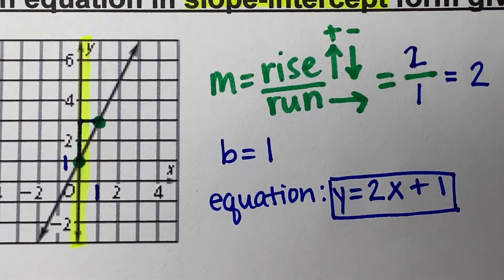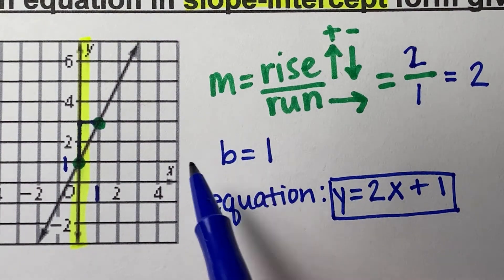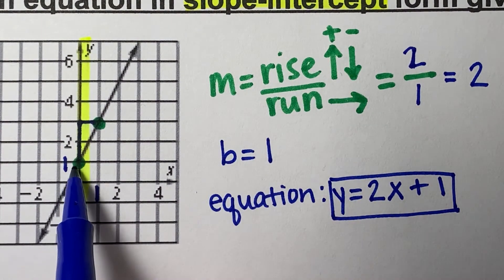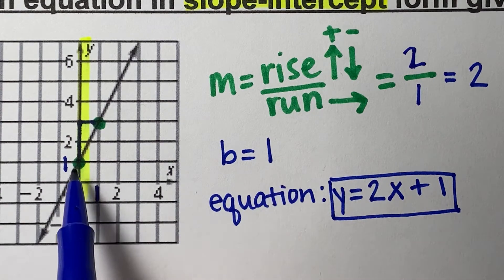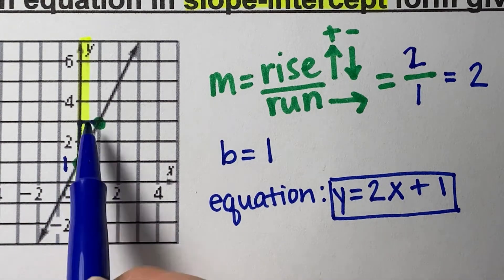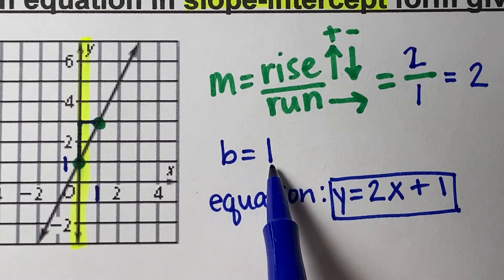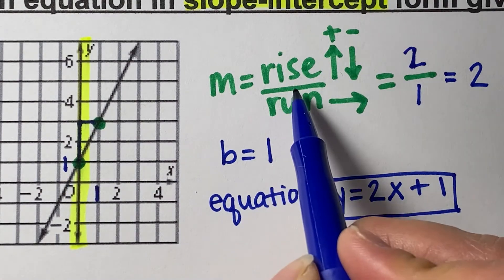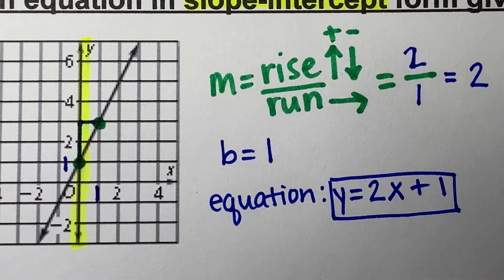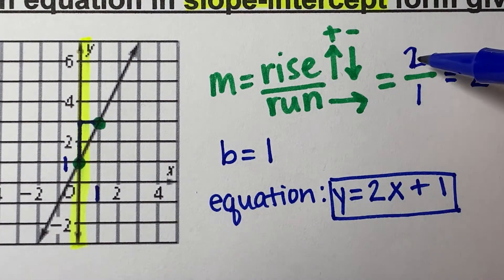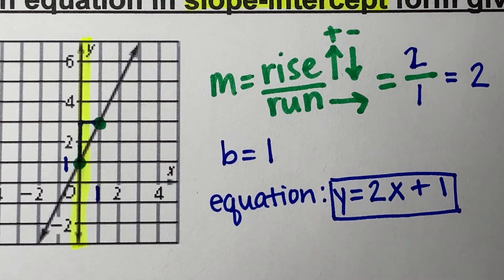To find b, you're going to look at the y-axis, and you're only writing the value — you don't have to write it as a point (0, 1); we're just writing the y value to indicate b. For slope, we found our rise, which was 2, over run, which was 1. So 2 divided by 1 is 2, and our slope is 2.